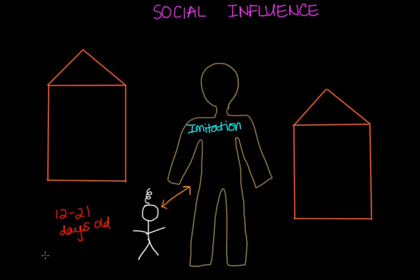Mirror neurons have also fascinated scientists. Basically, when one fires as we act, another is fired when we observe the same action performed by another person — these neurons are mirroring the behavior of the other. They have been found in areas of our brain such as the somatosensory cortex and the motor and premotor cortex, and they can be helpful in understanding imitation further.